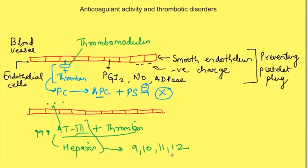These mechanisms also keep the clot localized to the site of injury, because pro-coagulant factors become dominant only at the site of injury. The endothelial factors — including thrombomodulin, which is attached to the endothelium — will become ineffective at the site of injury.